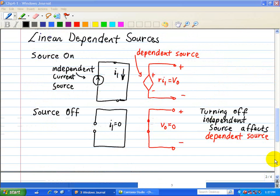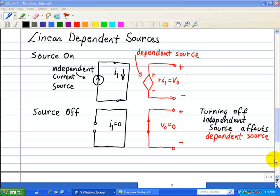In previous videos, we found that voltage sources act like short circuits when turned off, and current sources behave as open circuits when turned off. The same applies to dependent sources with one important difference.